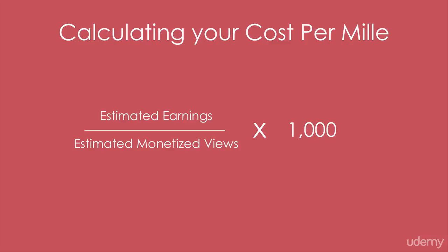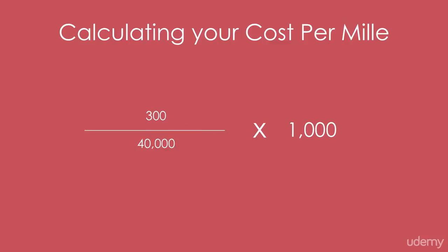Take those two stats and, for example, say you have $300 in estimated earnings and 40,000 estimated monetized views — those are views with ads on them. Multiply by 1,000 and you will get $7.50 per thousand monetized views. That is typically the average CPM on YouTube — I would say between $7 and $8 is the average.